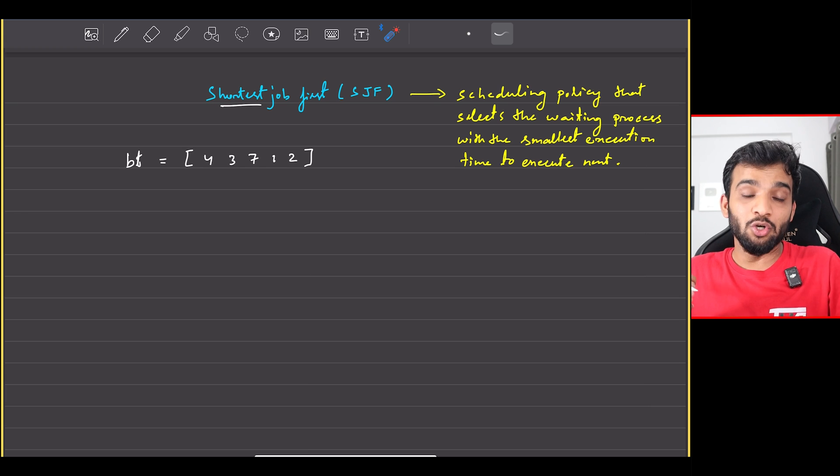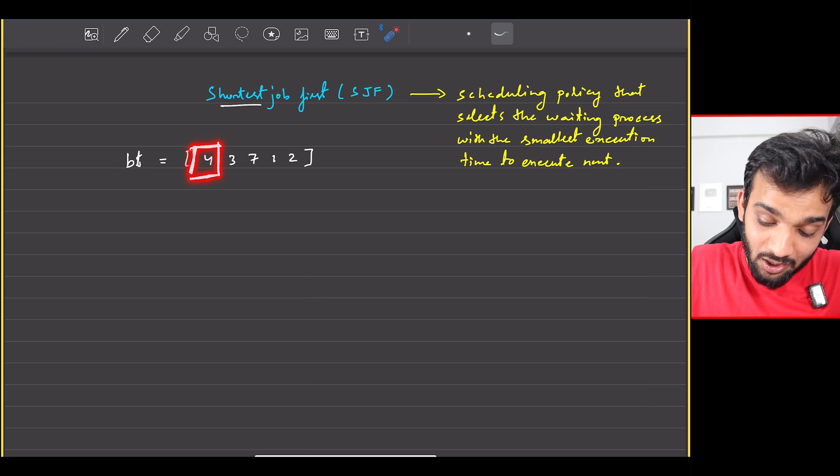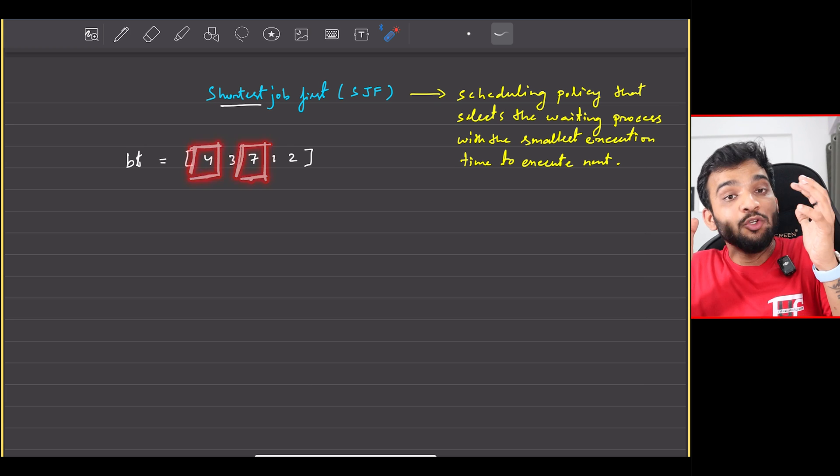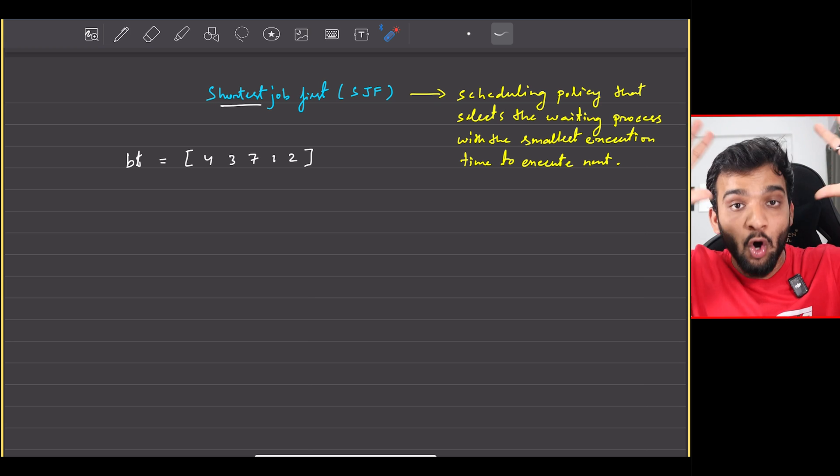The first process takes four units of time to execute, the third process takes seven units of time to execute. Now your task is to compute the average waiting time for all the processes.